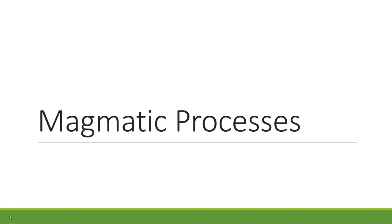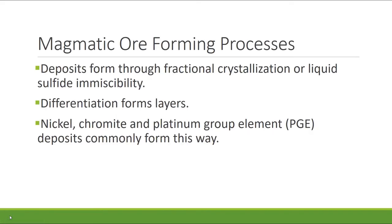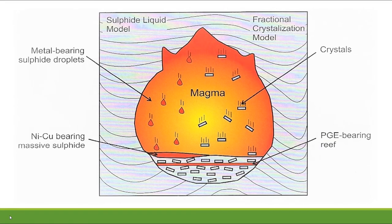Magmatic processes result in the concentration of ore-forming minerals as a consequence of chemical and mineralogical processes in magma. Magmatic ore deposits form through the differentiation of magma chambers or lava flows through fractional crystallization or liquid sulfide immiscibility. The differentiation process forms layers of varying composition and density and is the mechanism by which many of the world's nickel, chromite, and PGE deposits form. Liquid sulfide immiscibility is the process by which magma becomes supersaturated with sulfur. Sulfide droplets form in the magma chamber and attract nickel, copper, and platinum group elements. These sulfide droplets are denser than the surrounding silicate magma and sink to the bottom, forming a layer of massive sulfide containing economic concentrations of nickel, copper, and platinum group elements.